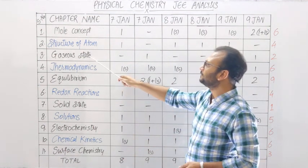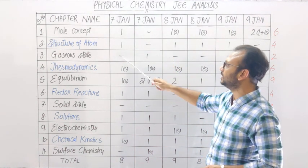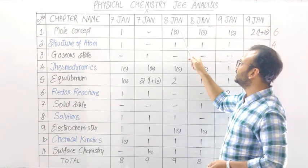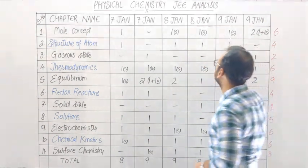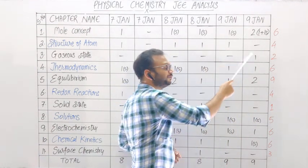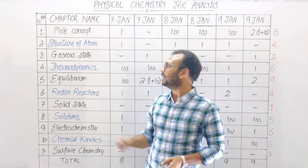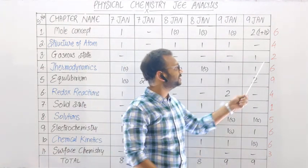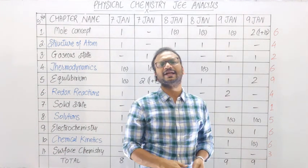The next chapter, guys, is Gaseous State. If you can see: 7th January morning shift, evening shift; 8th January morning and evening shift; 9th January morning shift; 9th January evening shift — in total, across 6 papers, there are only 2 questions. This chapter is not very important. If you want, you can skip this chapter.